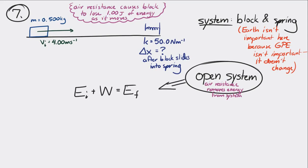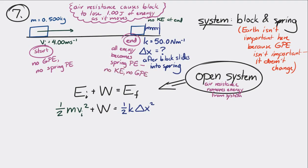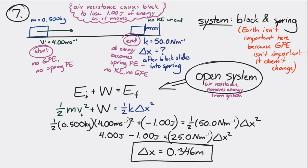If it's an open system, then EI plus W equals EF. The total energy at the beginning is just the kinetic energy of the block — no gravitational potential energy, no spring potential energy at the beginning. That plus the work done by air resistance equals the spring potential energy at the end, because at maximum compression the block isn't moving and height never changes. Solving for delta X, the compression of the spring at the end is 0.346 meters.